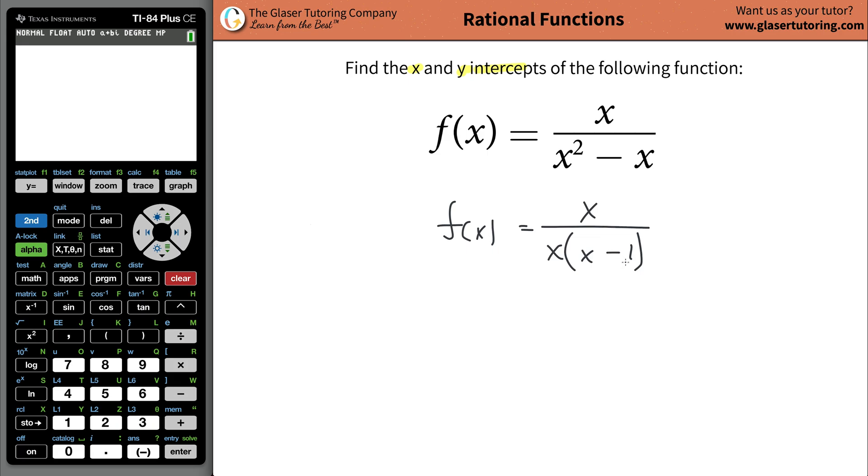Now what you're going to do from here is that you're going to cancel any terms that are possible between the numerator and the denominator. So what I can do is I can cancel this x on the top and that x on the bottom. So the function I'm left with now is going to be simply 1 divided by x minus 1.